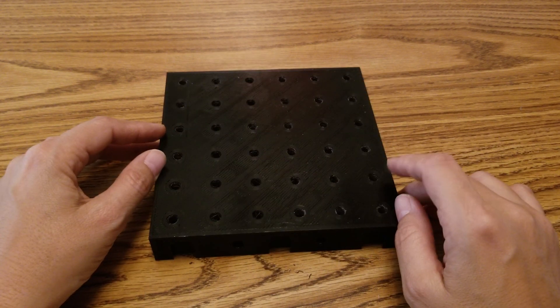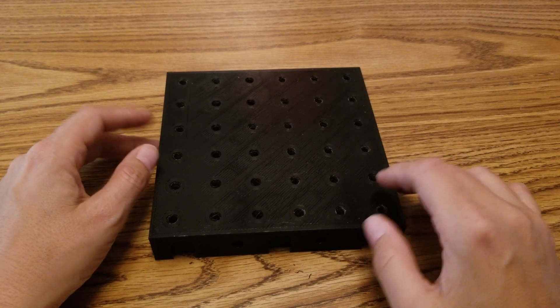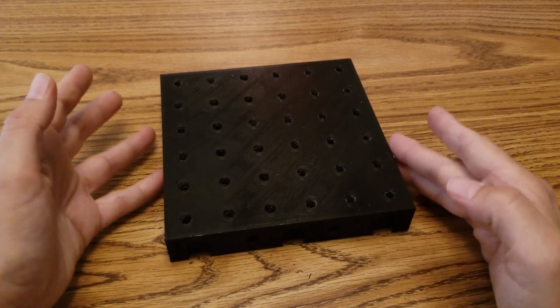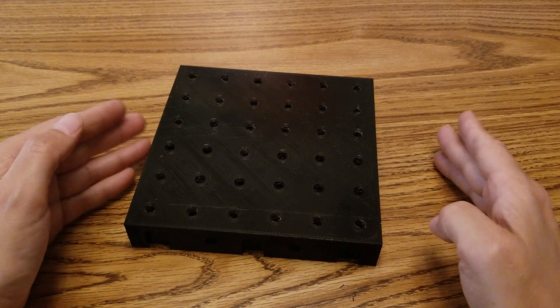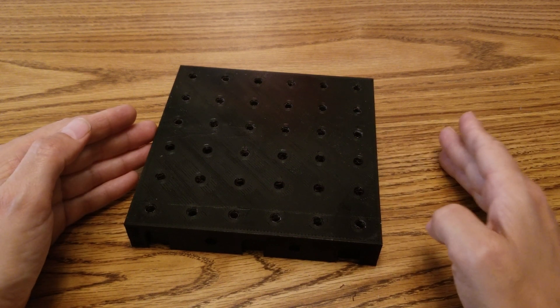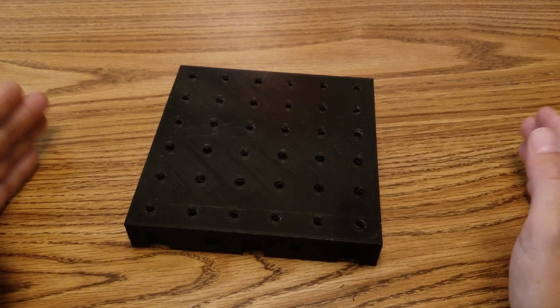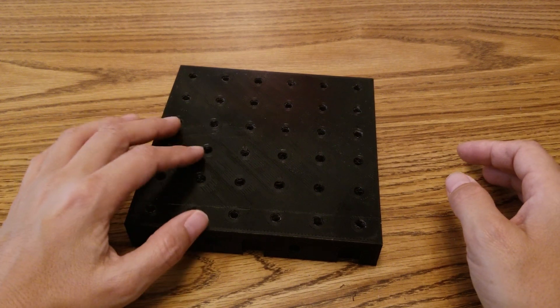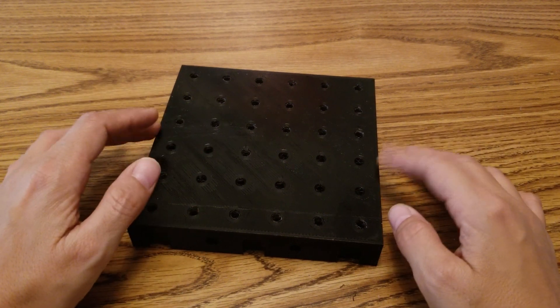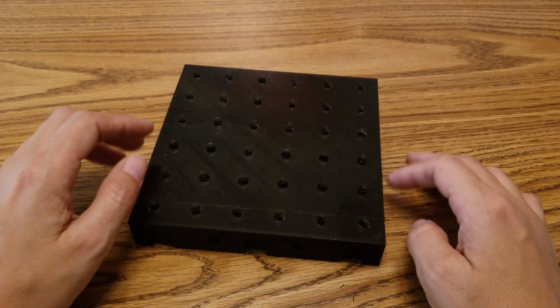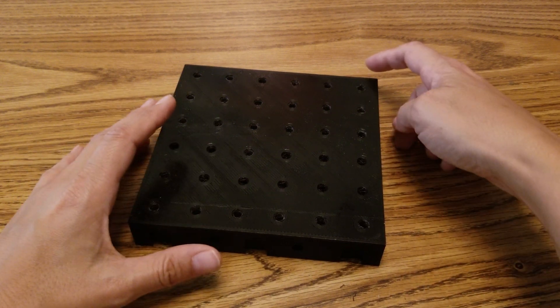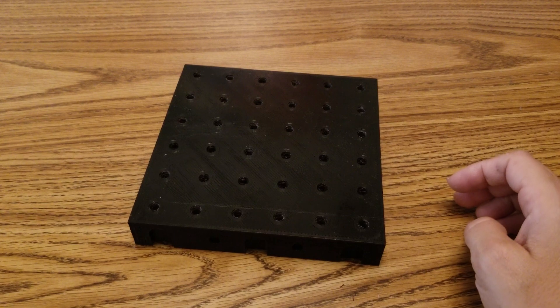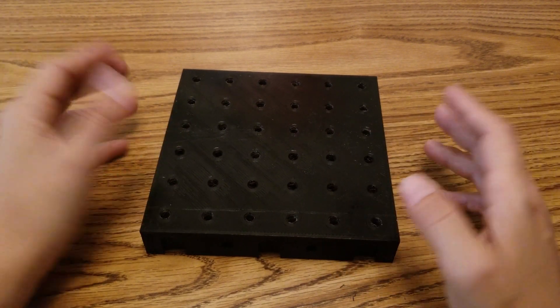What this is is an optical breadboard that can be 3D printed. I've tried to keep it small enough that it could be printed on most printers. A Prusa Mark III would be able to print a little larger, but I thought this would be a good size. My Prusa Mark II can easily print this even with a dual extruder and I kept it well below 180 millimeters. So anyway, what is it?